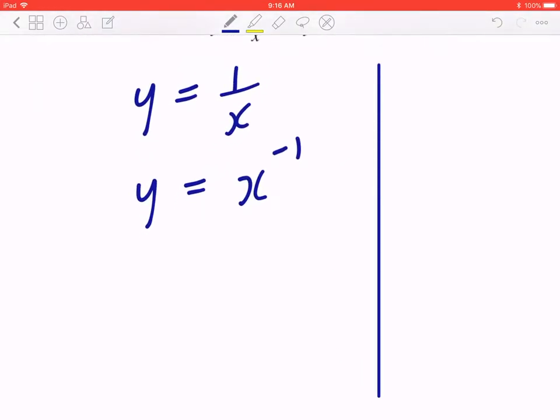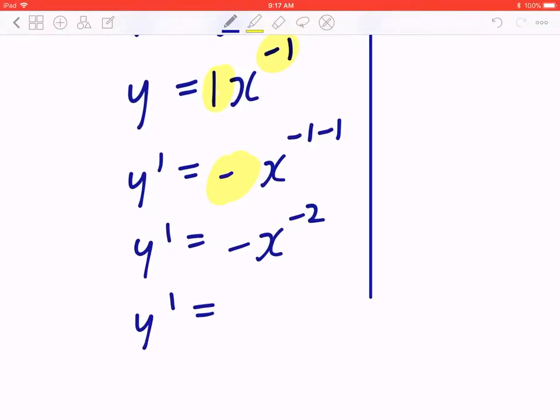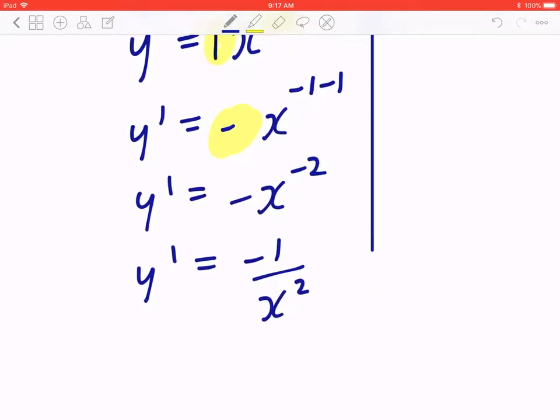When you use the power rule, y prime equals to, there's a 1 at the front, you take the exponent, negative 1, and you multiply by the number at the front. So negative 1 times 1, that's going to be negative 1. You copy x, and you take the exponent, and you subtract 1. So negative 1 minus 1, that's going to give you negative 2. Or you can express this with a positive exponent, negative 1 divided by x squared. And this is the general slope of the first case.